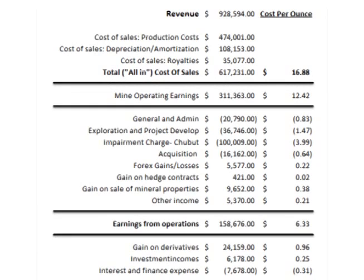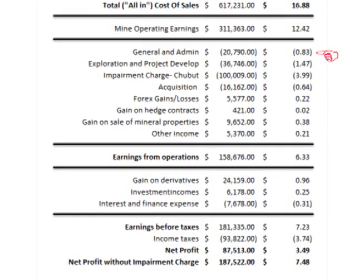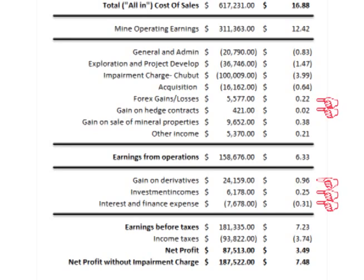For Pan Am's complete cost to produce silver, adding on to the total cost of $16.88: $0.83 per ounce for administration costs, $1.47 per ounce for exploration costs, $0.64 per ounce for acquisition costs. They had a $0.38 gain from the sales of mineral properties, and a $1.14 gain from finance, investment, derivatives, hedging, and interest costs and credits.